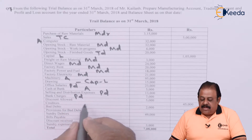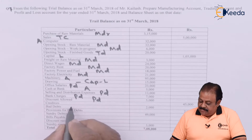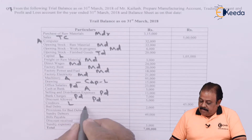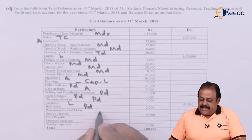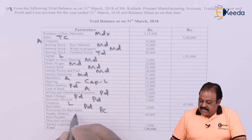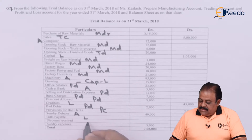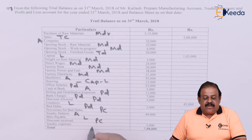Discount allowed — profit and loss account debit. Creditors — liability. Bad debts — profit and loss account debit. Provision for bad debts — this is old provision, profit and loss account credit. Sundry debtors — asset. Bills payable — liability. Discount received — profit and loss account credit. Sundry expenses — profit and loss account debit.